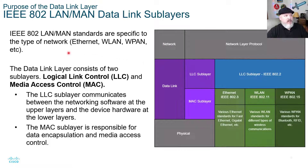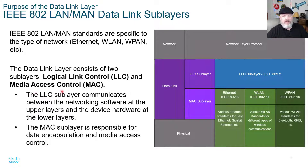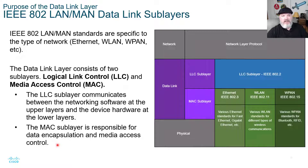The IEEE 802 LAN and MAN standards are specific to the type of network, whether it's Ethernet, WLAN, or WPAN. The data link layer consists of two sub-layers: the Logical Link Control (LLC) and the Media Access Control (MAC) — distinct from the MAC address. The LLC sub-layer communicates between networking software at the upper layers and device hardware at the lower layers, while the MAC sub-layer is responsible for data encapsulation and media access control.